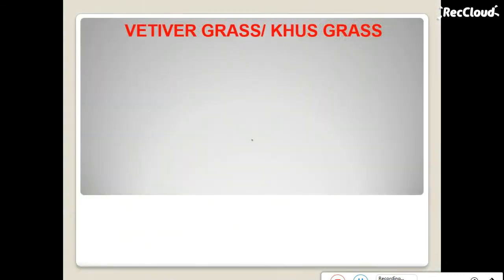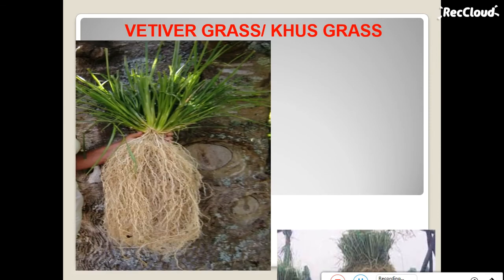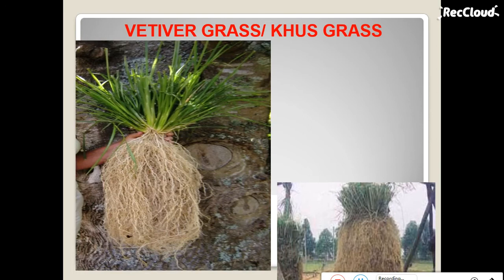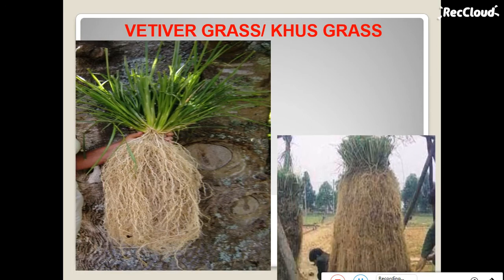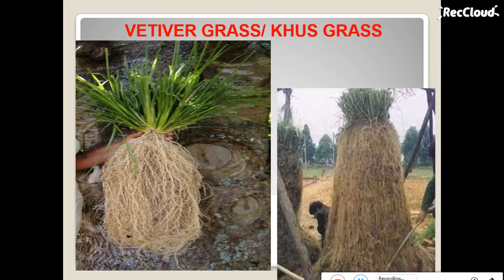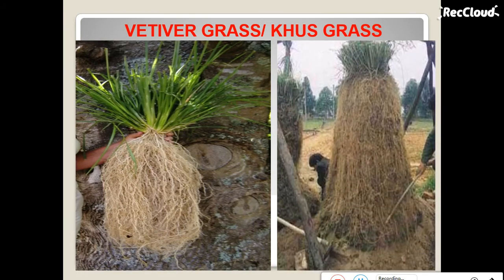Next one is vetiver grass. We will now discuss aromatic crops. Vetiver grass is also known as khush grass. See the image of vetiver grass — it is like lemongrass and palmarosa grass.